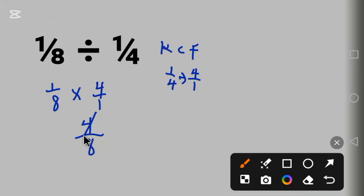2 into 4 is 2, 2 into 8 is 4. So we get 2 over 4, which simplifies: 2 into 2 is 1, 2 into 4 is 2.